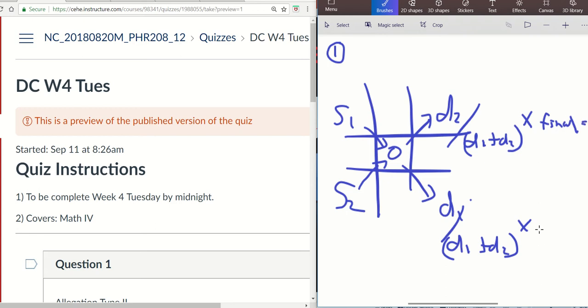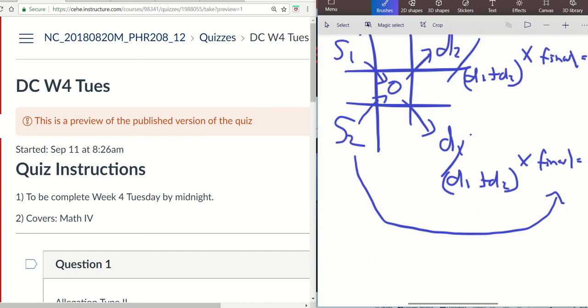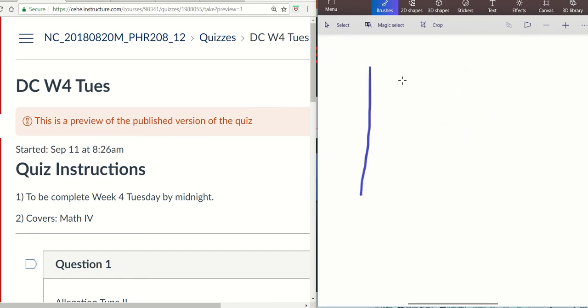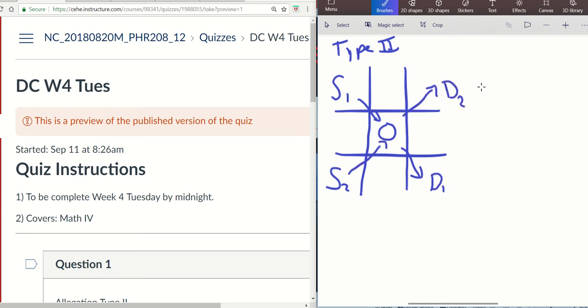And then the last step is to multiply by the final volume. Whatever mLs you get here corresponds to that strength supply, and whatever volume you get here corresponds to S2 strength supply. So in Allegation Type 2, it's very similar. We're going to start it off the same exact way. Order goes in the middle. I'll label this Type 2. You still have a supply and a second supply, you're still going to find the difference—I'll call that D1. You'll still find the difference, but the similarities end here.